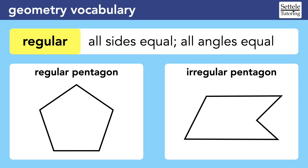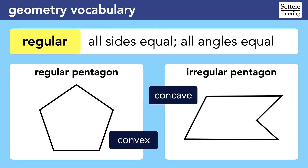On very hard questions, you might also hear a polygon described as convex or concave. The pentagon on the left is convex because all of its interior angles are less than 180 degrees. The pentagon on the right is concave because it has at least one interior angle that is greater than 180 degrees.